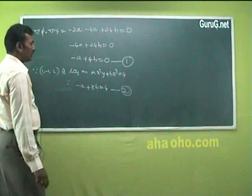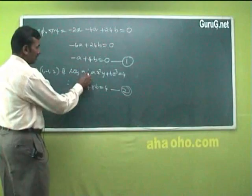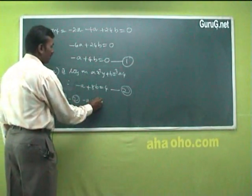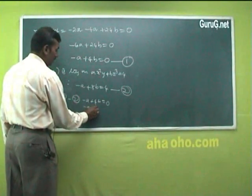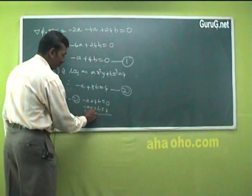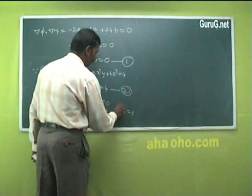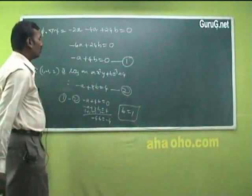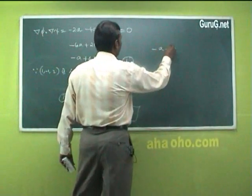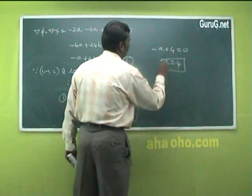Subtracting equation 1 from equation 2: (−A + 8B) − (−A + 4B) = 4 − 0, giving 4B = 4, so B = 1. Substituting B = 1 into equation 1: −A + 4(1) = 0, therefore A = 4.